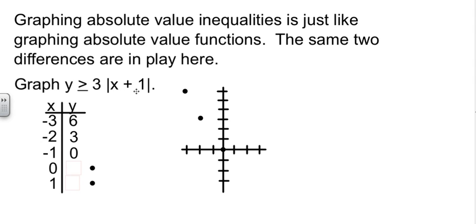At 0, 0, 0 plus 1 is 1, times 3 is 3. So we'll pick up our point at negative 2. Now, there's my problem. Put that in the wrong spot. But that's okay. We fixed it. First mistake I ever made today. And if we put in x equals 1, 1 plus 1 is 2, times 3 is 6.